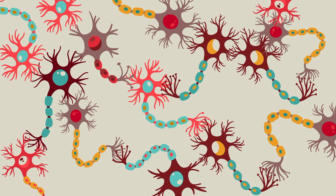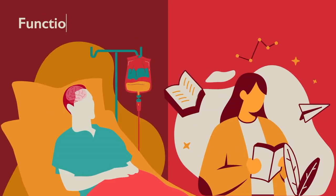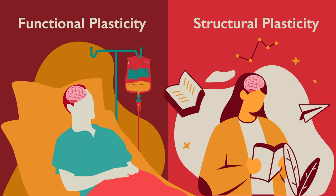The brain achieves these changes via two different methods: functional plasticity and structural plasticity.